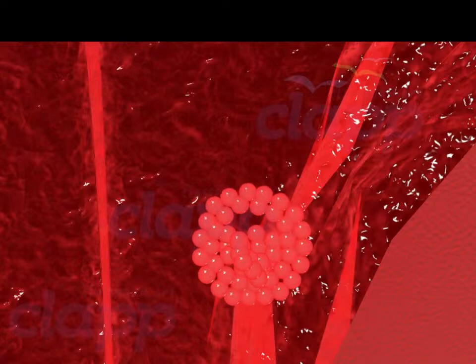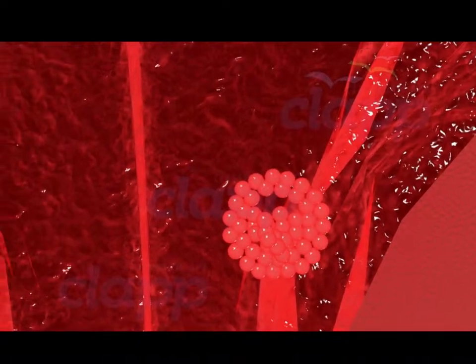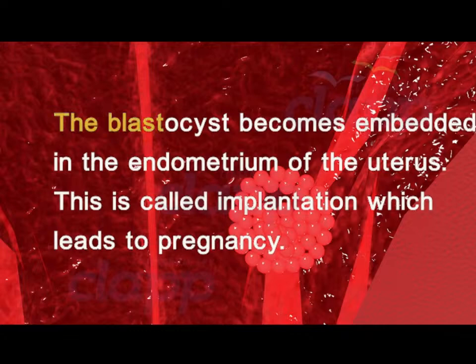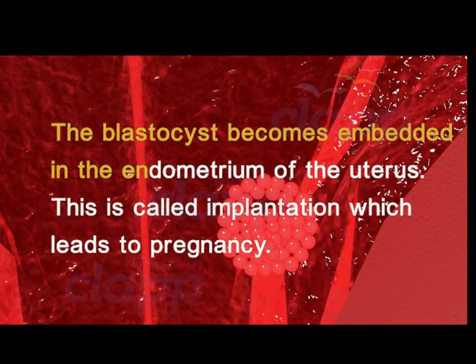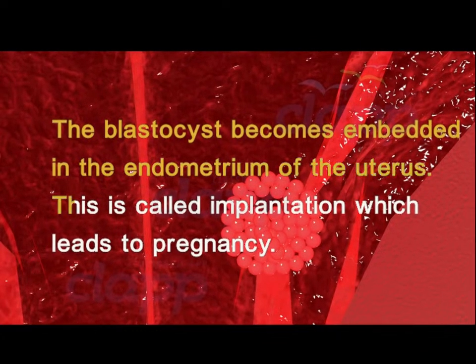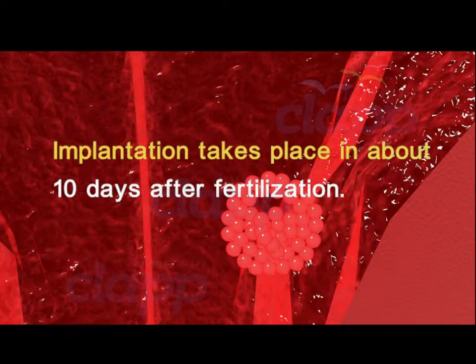After attachment, the uterine cells divide rapidly and cover the blastocyst. The blastocyst becomes embedded in the endometrium of the uterus. This is called implantation, which leads to pregnancy. Normally, implantation takes about 10 days after fertilization.